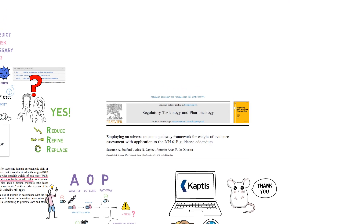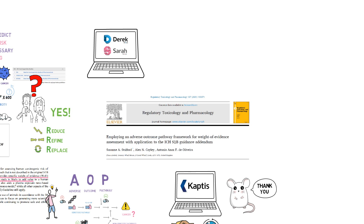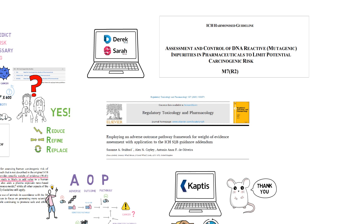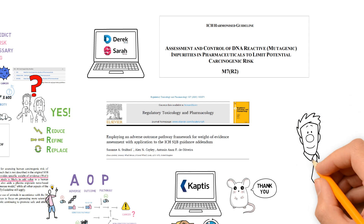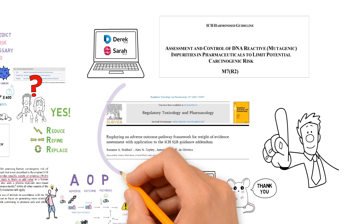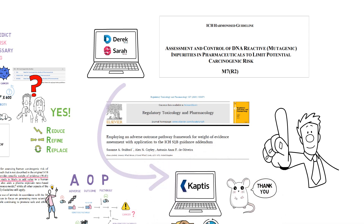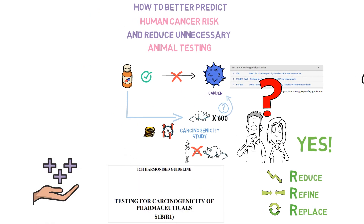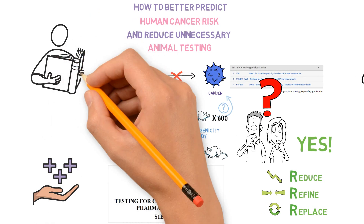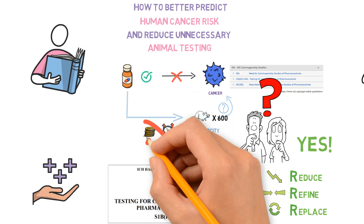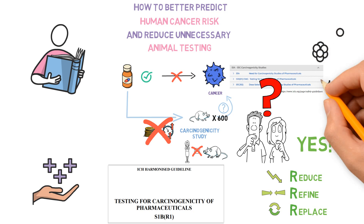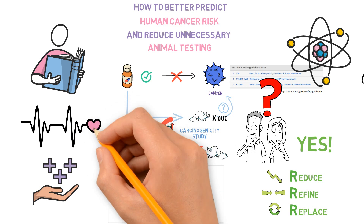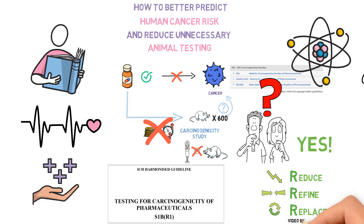Imagine the number of animal lives that would be spared as more companies start to use this approach. The industry has already been using predictions for simple endpoints like mutagenicity to replace the Ames test as described in ICH M7, but this is the first time we can assess the risk of a very complex disease like cancer without the need for long-term rodent carcinogenicity studies. This promises a very positive future — showing how the advancement of our knowledge can save time and money, spare the lives of hundreds of animals, and give human-relevant, much better predictions of cancer risk to better protect human health.